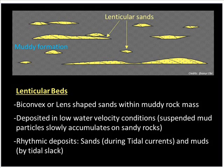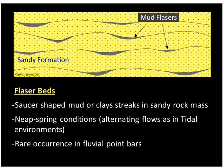There's another case, kind of a flip from the lenticular — we now have flaser beds. Flaser beds are saucer-shaped muds or clays; sometimes you see them as streaks in a dominantly sandy unit. They are typical of conditions where tidal flow has been alternating. You have a period with largely sand and mud streaks at boundaries between individual sand beds. You often find them in tidal environments, but very rarely in fluvial point bars and some ephemeral streams.